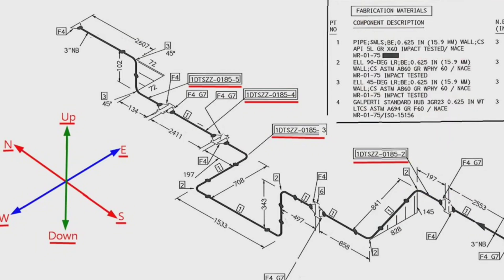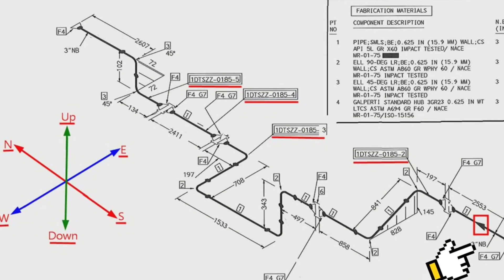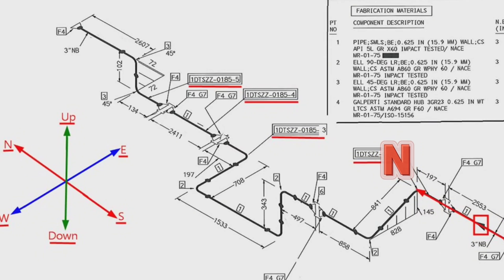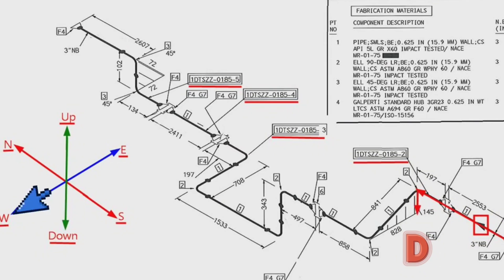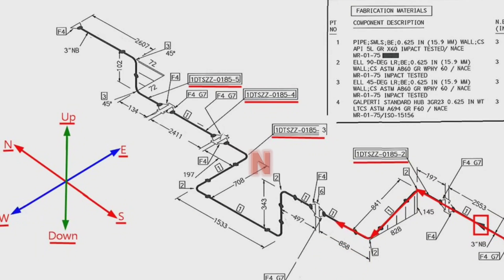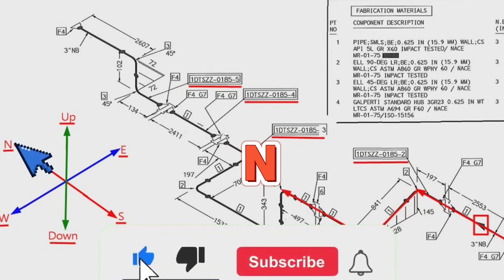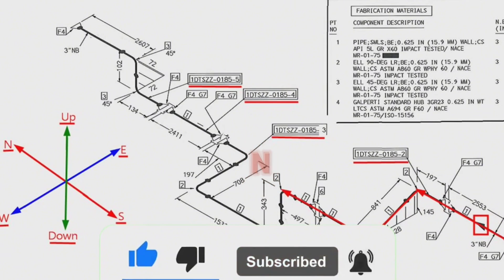We will start reading the pipeline isometric from this point, because the direction of the arrow on the pipe drawing points in this direction. The pipe travels north from this starting point, then first moves down along the dashed lines 145 mm, and then to the west along the dashed line 828 mm.